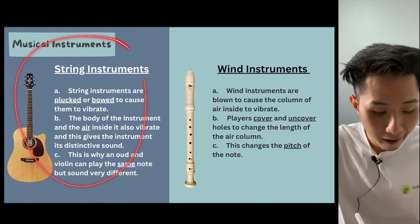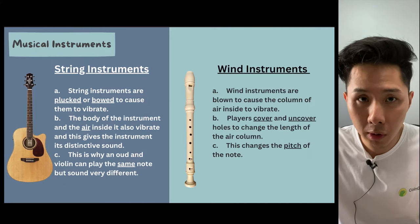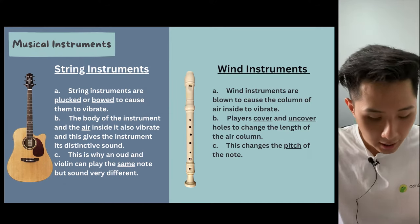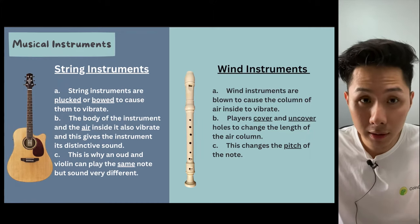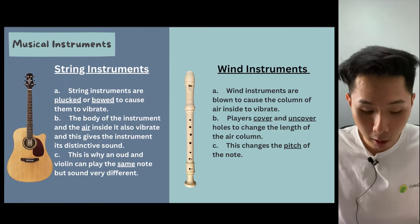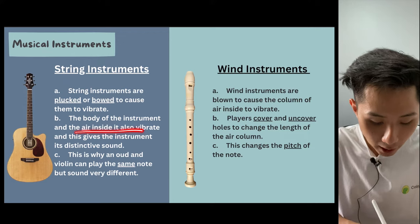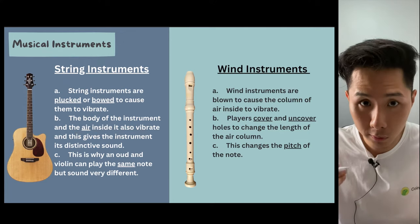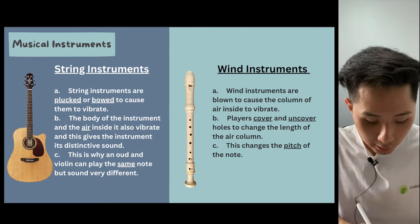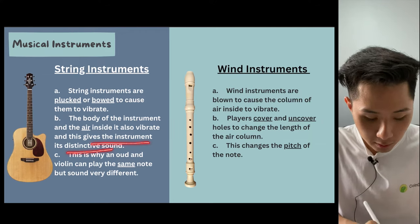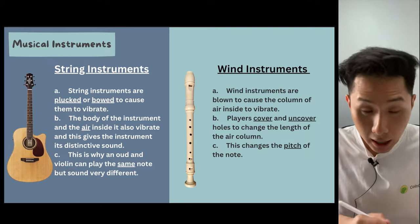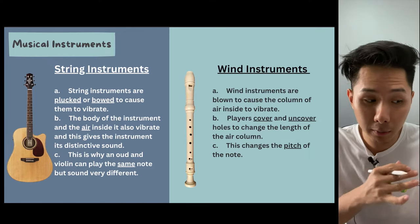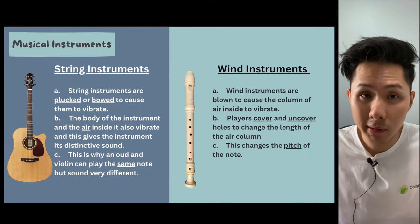Here are how some of the musical instruments work to produce vibration. For string instruments, we know that it is the string. When you pluck them, they will vibrate and that's what causes the sound. The air inside the instrument will also vibrate, which explains why each instrument will have its own distinctive sound and why different instruments, when they play the same note, can produce very different sounds.